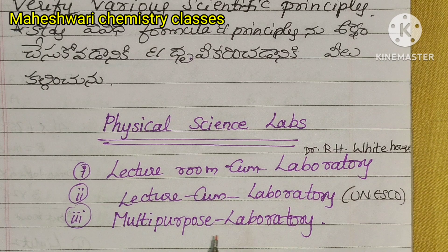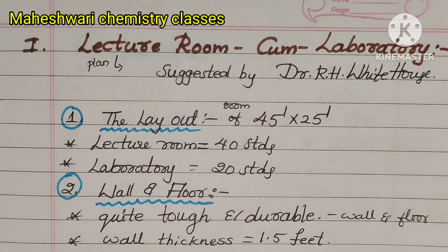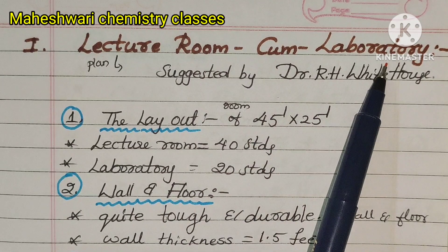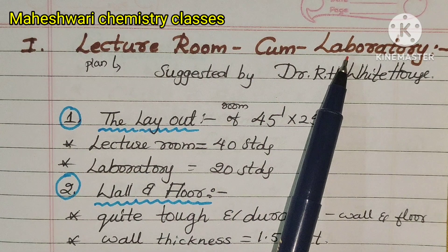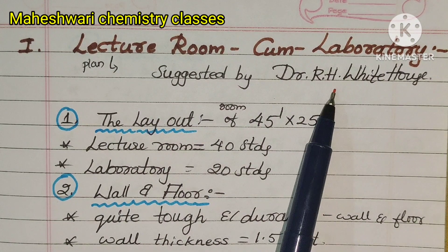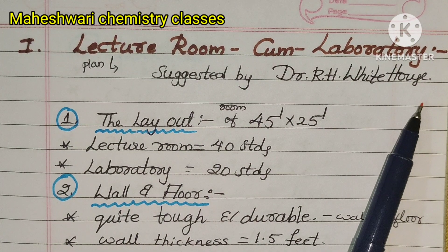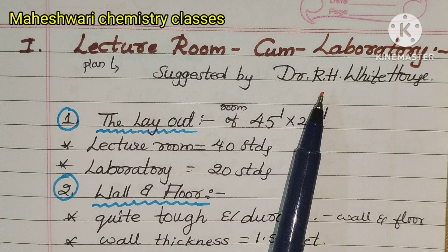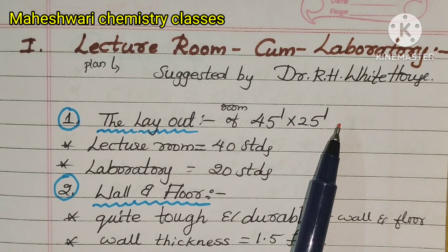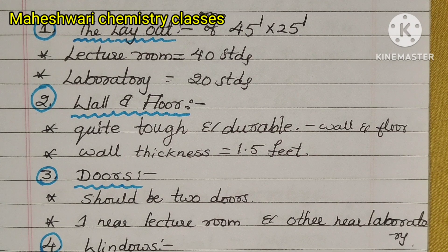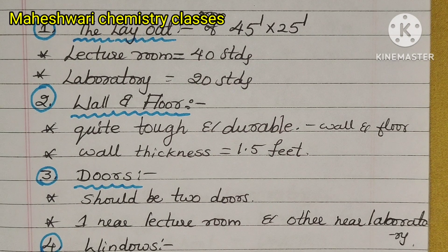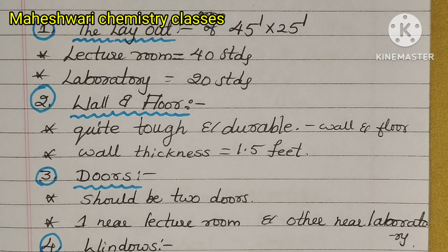Now we have to learn what each type is clearly. The first one is lecture room come laboratory. The lecture room come laboratory plan was suggested by Dr. R.H. Whitehouse. There are 6 main points for this laboratory.